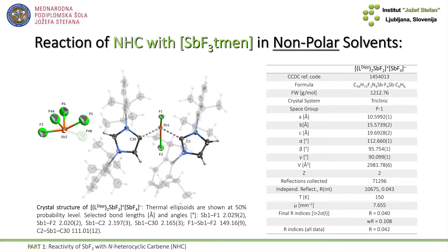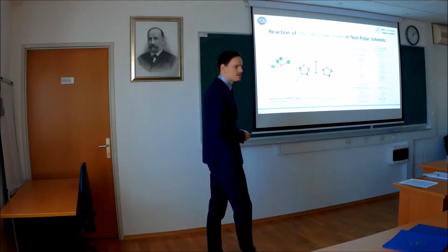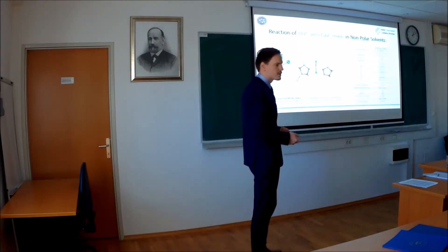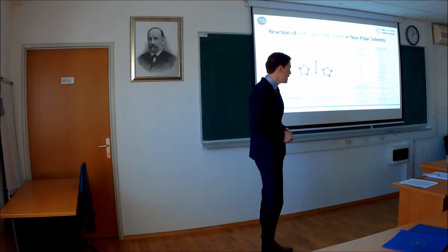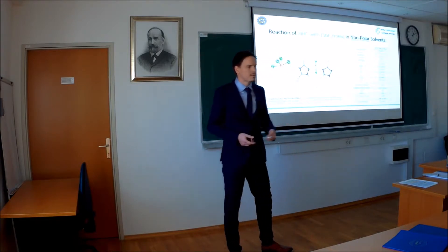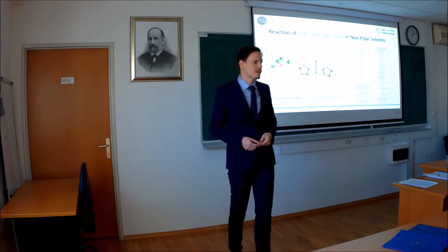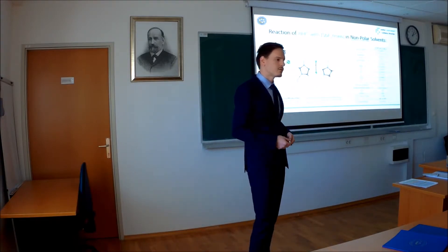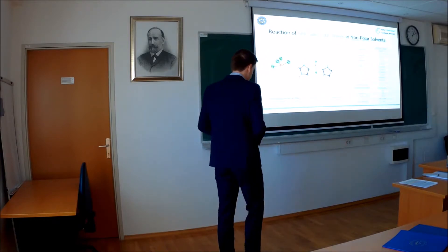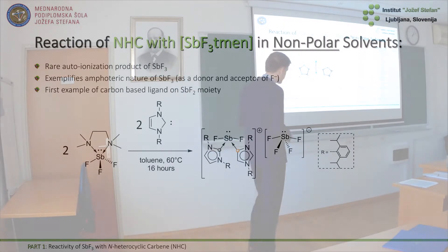From the crystal structure, you can see that one of the carbenes binds to the SbF2 moiety normally via the C2 position. However, the second one binds abnormally via the C4 position. This complex represents the first example of an abnormally-bound carbene on any metal or metalloid fluoride to date.